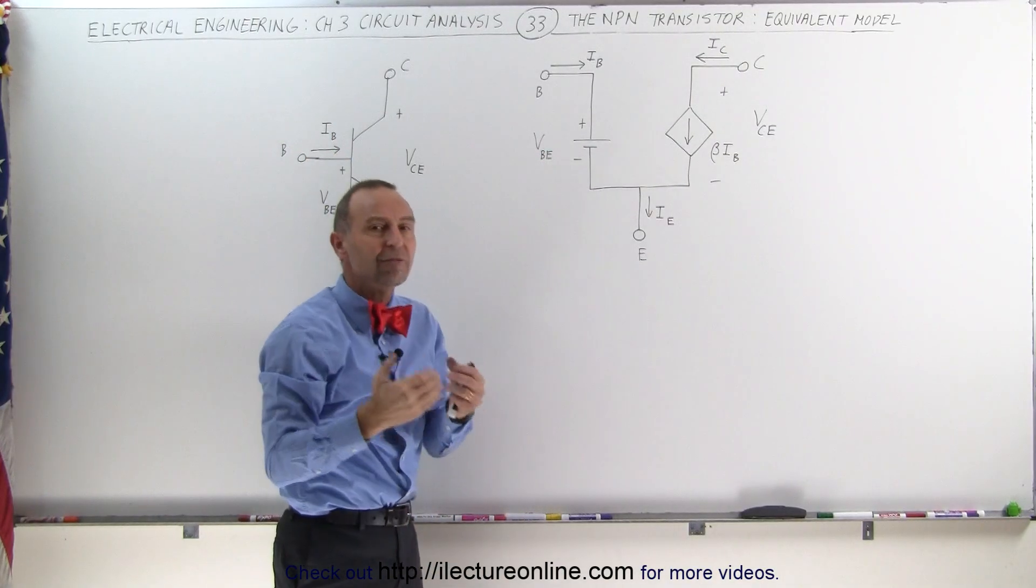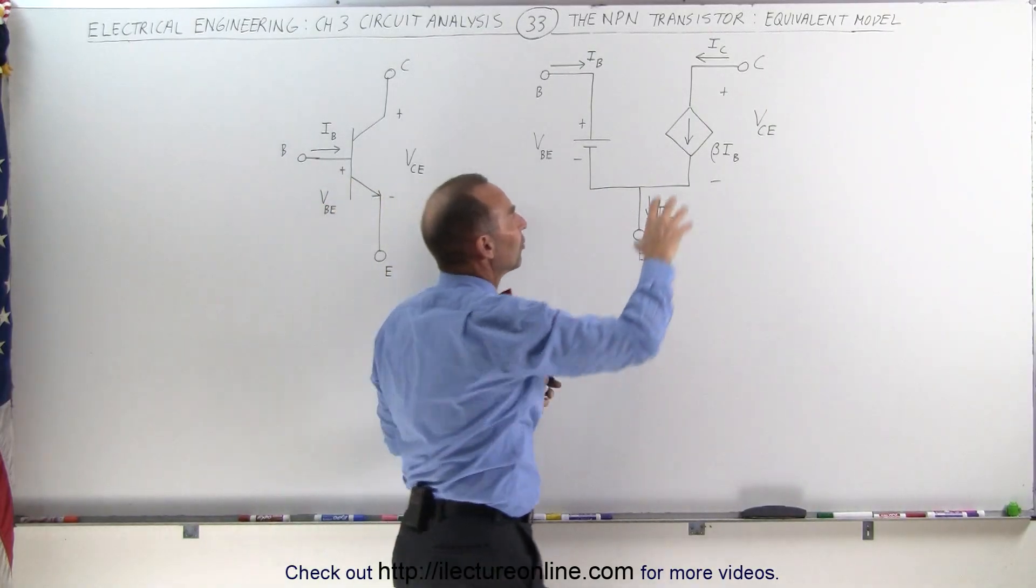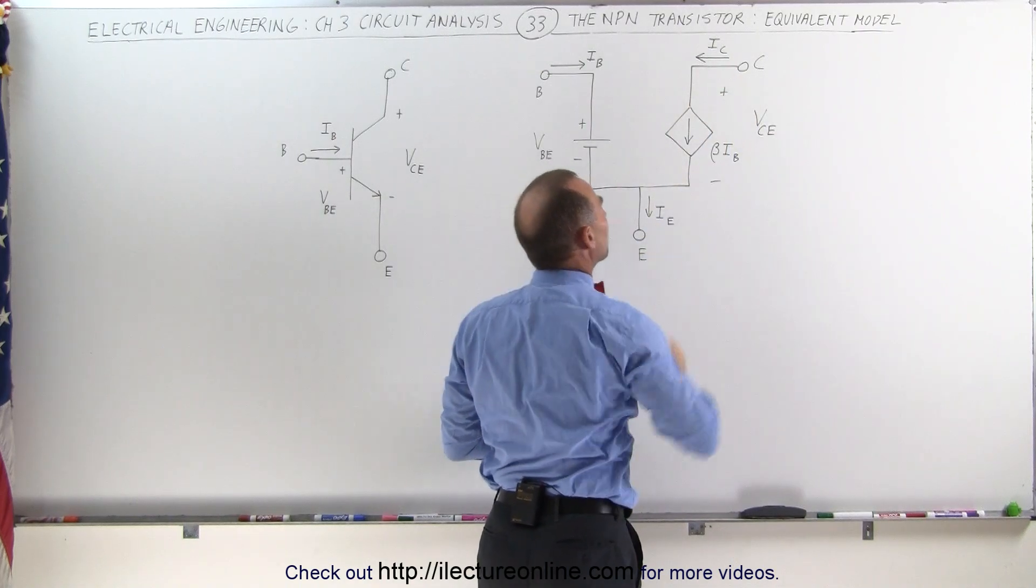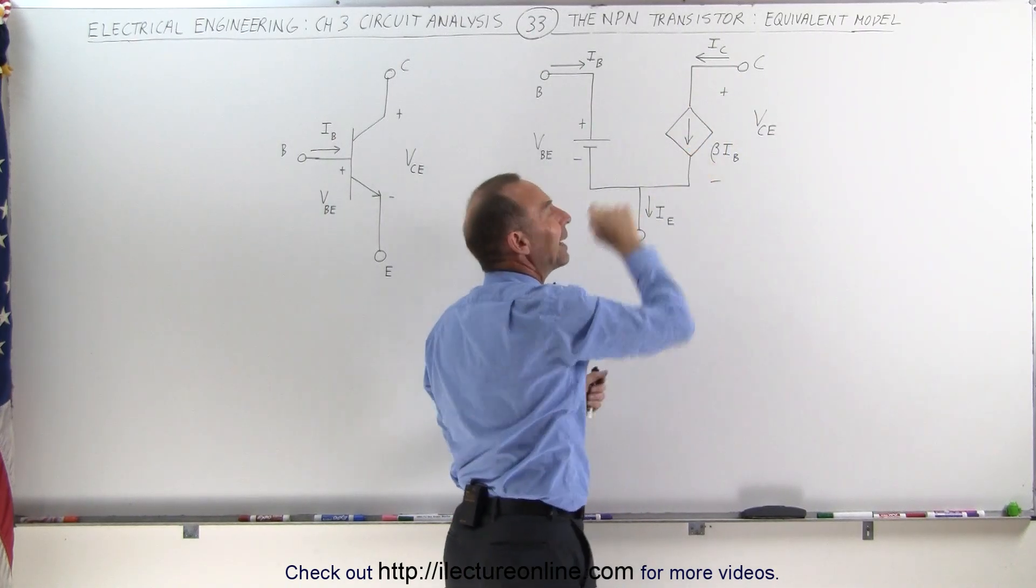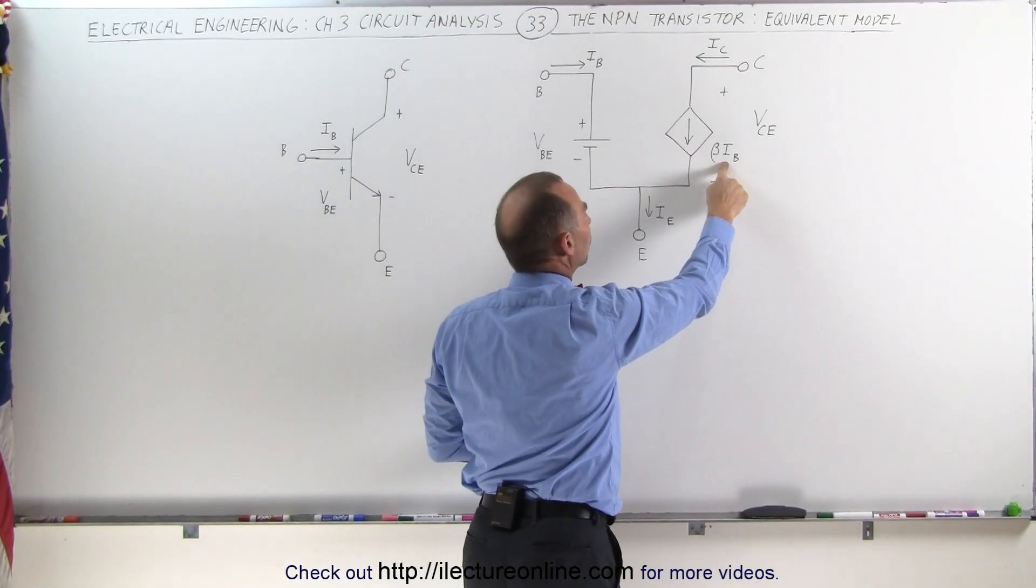So we look at that as a voltage source. The second part is the current being driven here from the collector to the emitter. Notice that it's a dependent current source because it depends on the base current.